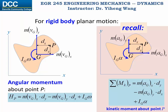Since we can calculate the angular momentum about any arbitrary point, of special interest is the angular momentum about point G, the gravitational center. Since the linear momenta do not have moments about point G, the angular momentum about G is always IG times omega. IG is the mass moment of inertia of the rigid body about an axis perpendicular to the plane passing through G. These two formulas for angular momentum are both general to any rigid body planar motion.